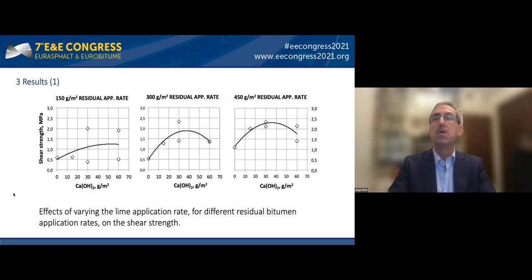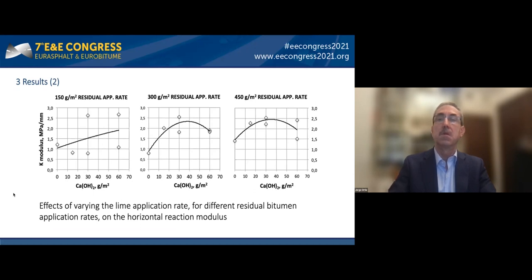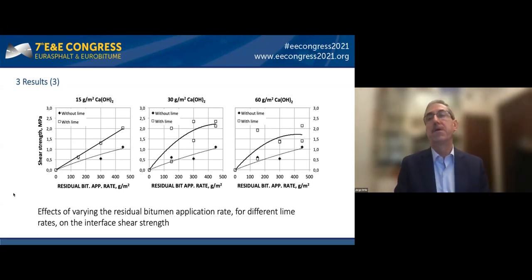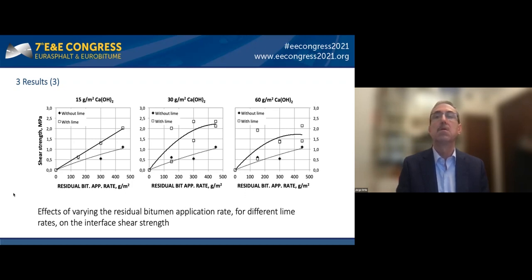The results show that lime application increases the shear strength of the interface between the existing layer and the new bituminous mixture layer, whatever the rate of the TAC coat, reaching a maximum value around 40 g per square meter. The same trend is observed for the K-modulus, which increases compared to no-lime interfaces and reaches its maximum around 40 g per square meter of calcium hydroxide. In lime interfaces, shear strength grows to a maximum at approximately 400 g per square meter of binder.